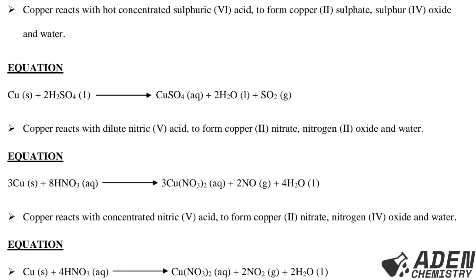The equation: Cu(s) + 2H₂SO₄(conc., l) → CuSO₄(aq) + 2H₂O(l) + SO₂(g). Observations: the red-brown solid dissolves in the acid; a blue solution is formed due to the formation of copper(II) sulfate solution; a colorless gas with a suffocating, irritating smell is formed due to the formation of sulfur dioxide gas.